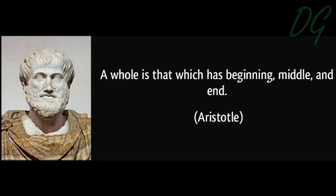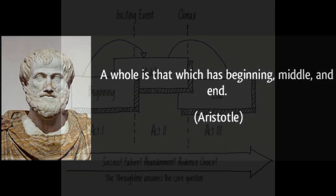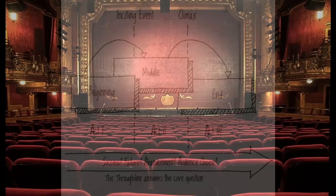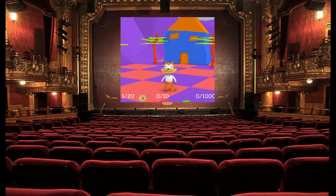Basic narrative structure was likely first defined by Aristotle, who put it as: a whole is that which has a beginning, middle, and end. This is, of course, the traditional and linear means by which stories are told in books, TV, films, and theatre.